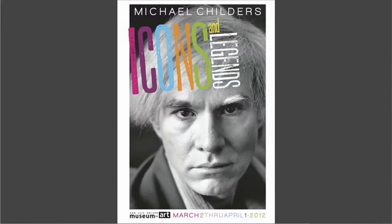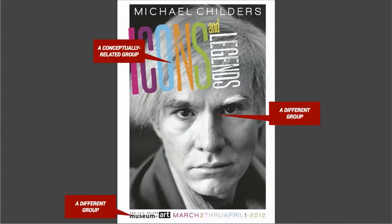A design example of using groups — putting things in proximity that are conceptually related. In this example, the title and the author are together at the top: Michael Childers, Icons and Legends — they're close, so those things are related. Then we have the figure of Andy Warhol in the center, and the features of his face create a different group. At the bottom, we have a third group, which is more information. The designer has smartly taken different concepts and separated them by proximity. The title and author are up top, separate from Andy Warhol's face, separate from the information.